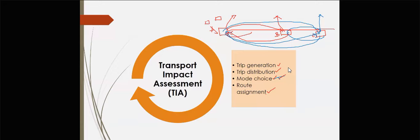Route assignment determines how to distribute people from one place to another so that a particular development does not become congested. In some places, they implement a one-way system with roundabouts so that people go in and go out, and the flow of traffic is assigned so it can be easily distributed without congestion — except during certain peak times.